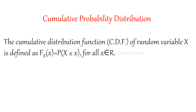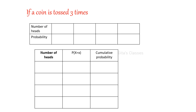Next is cumulative probability distribution. We have already seen its definition. Cumulative means the summation of probability up to that point. The cumulative distribution function gives the corresponding summation of probabilities for each value. Now I will give one example for the cumulative distribution function.